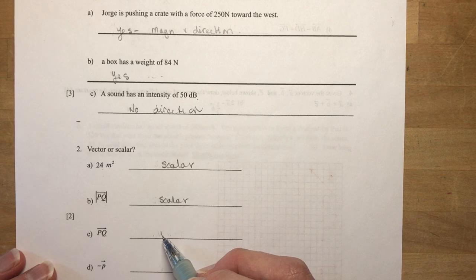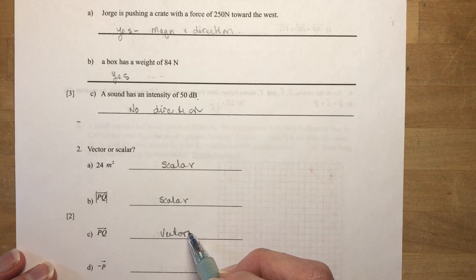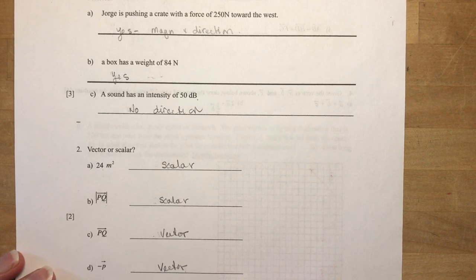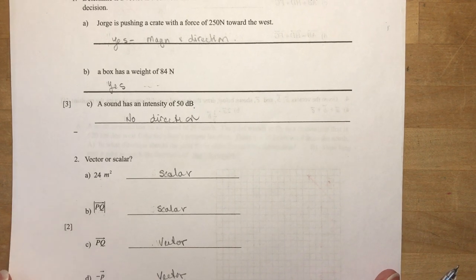Vector PQ, yes, that's a vector. It even says so. And negative vector P is also a vector. There you go. That would have been a quick five marks to start you off on a good foot.